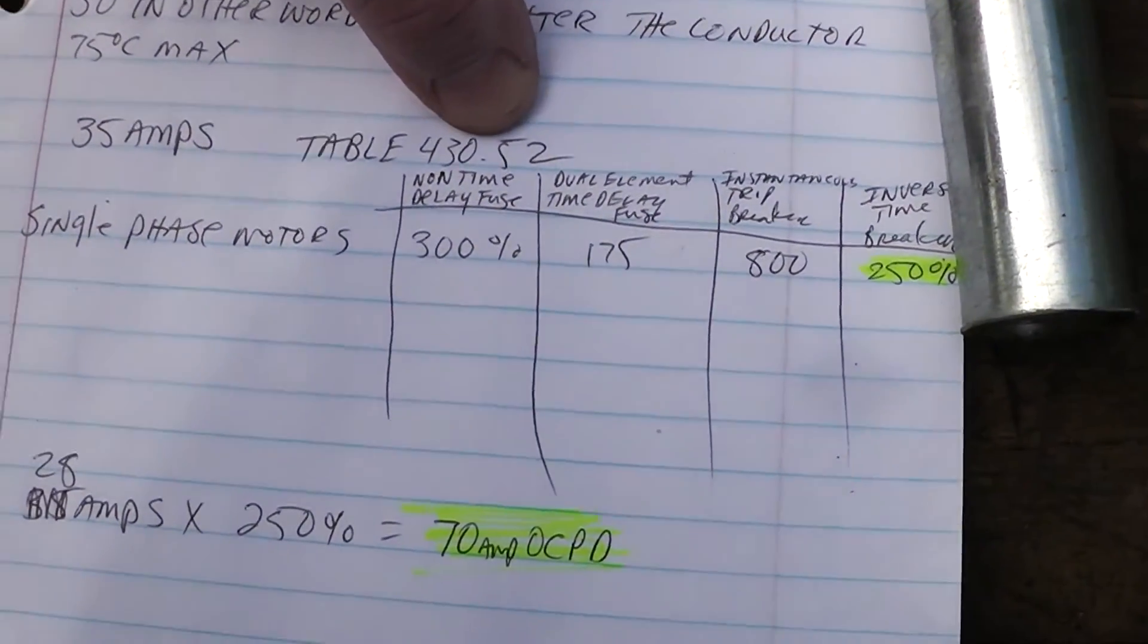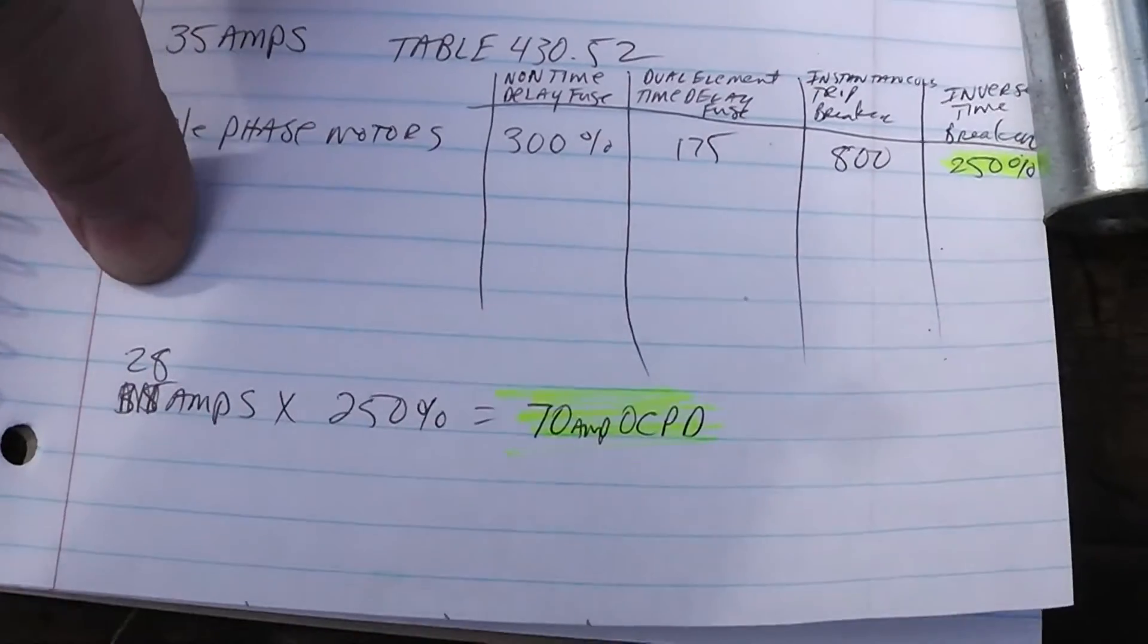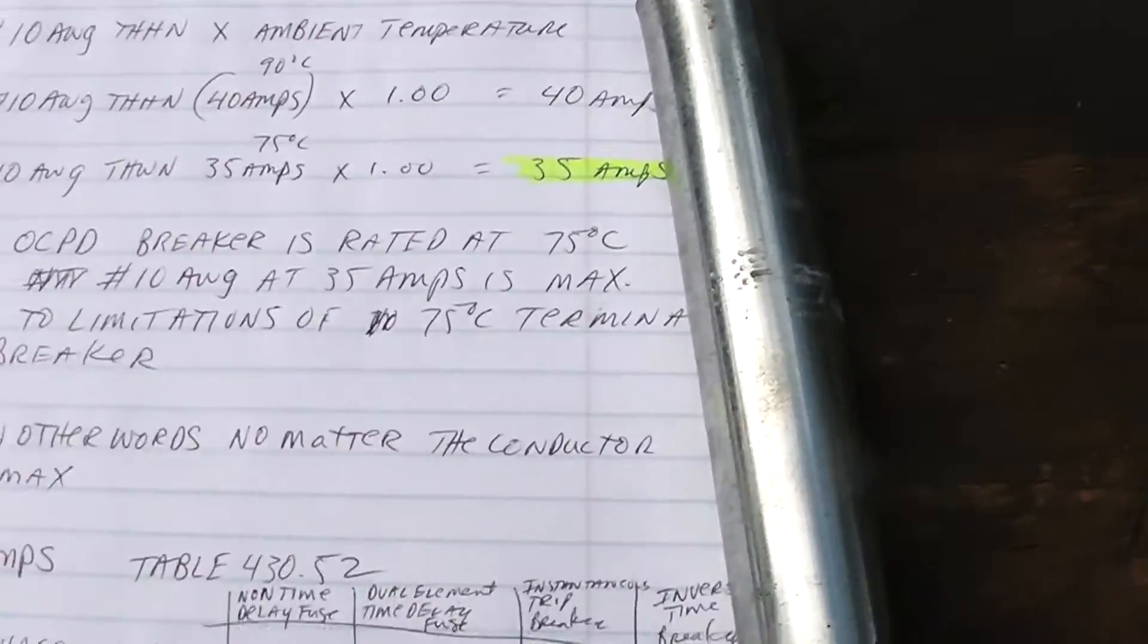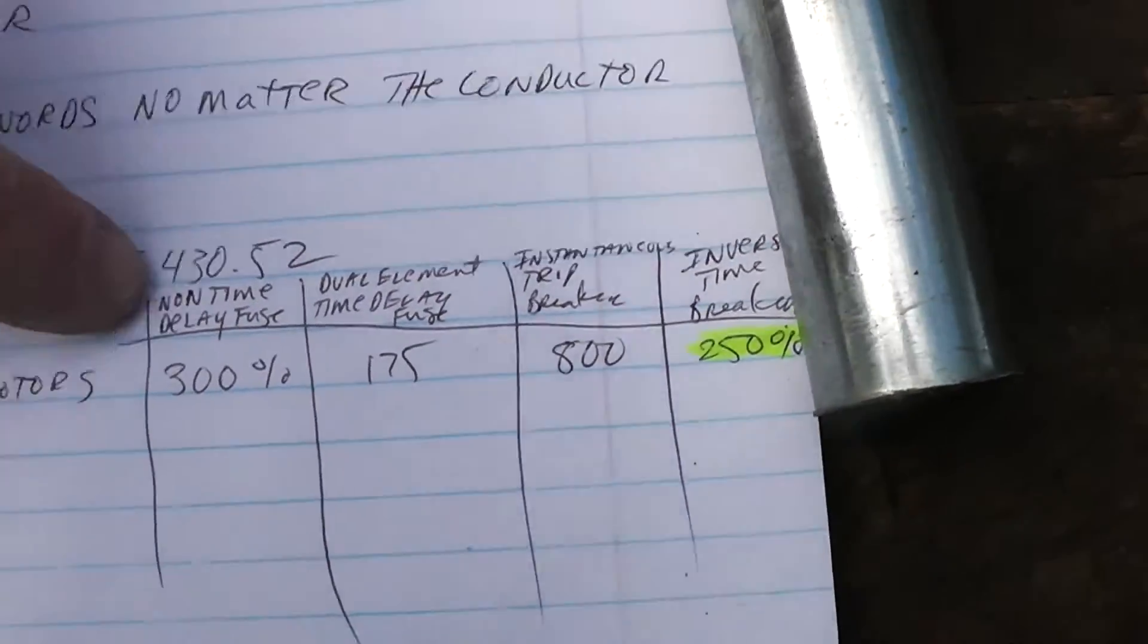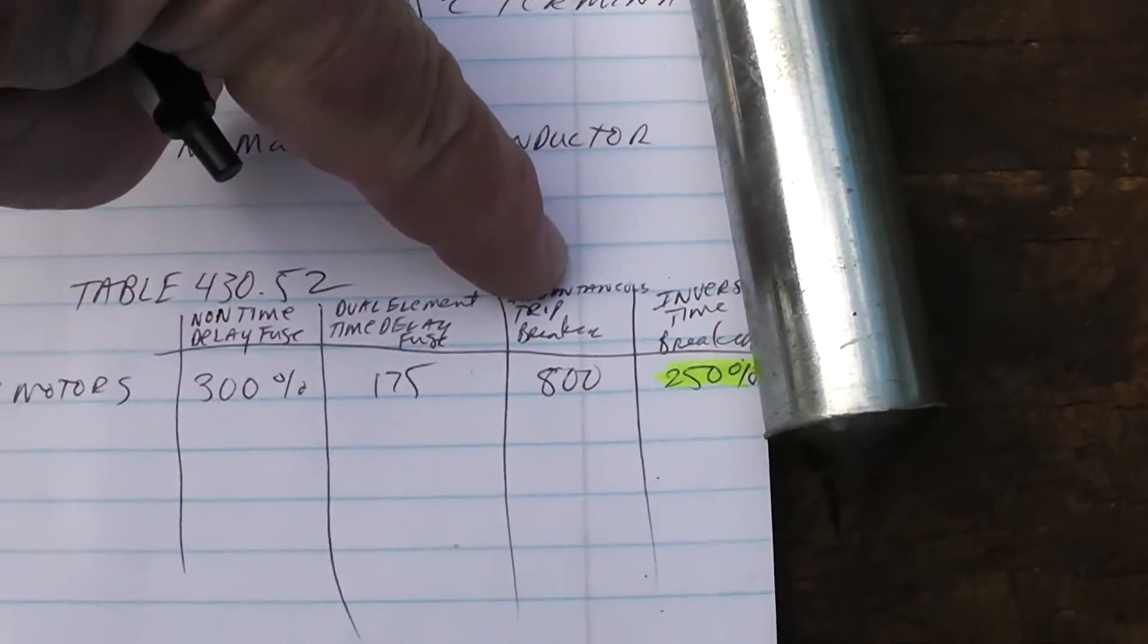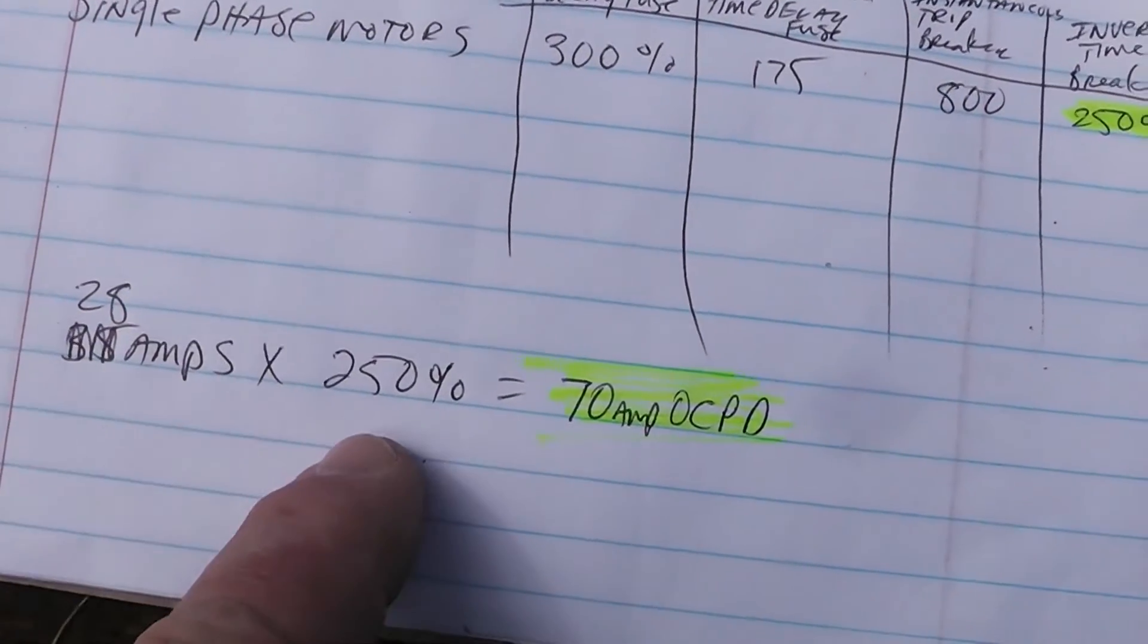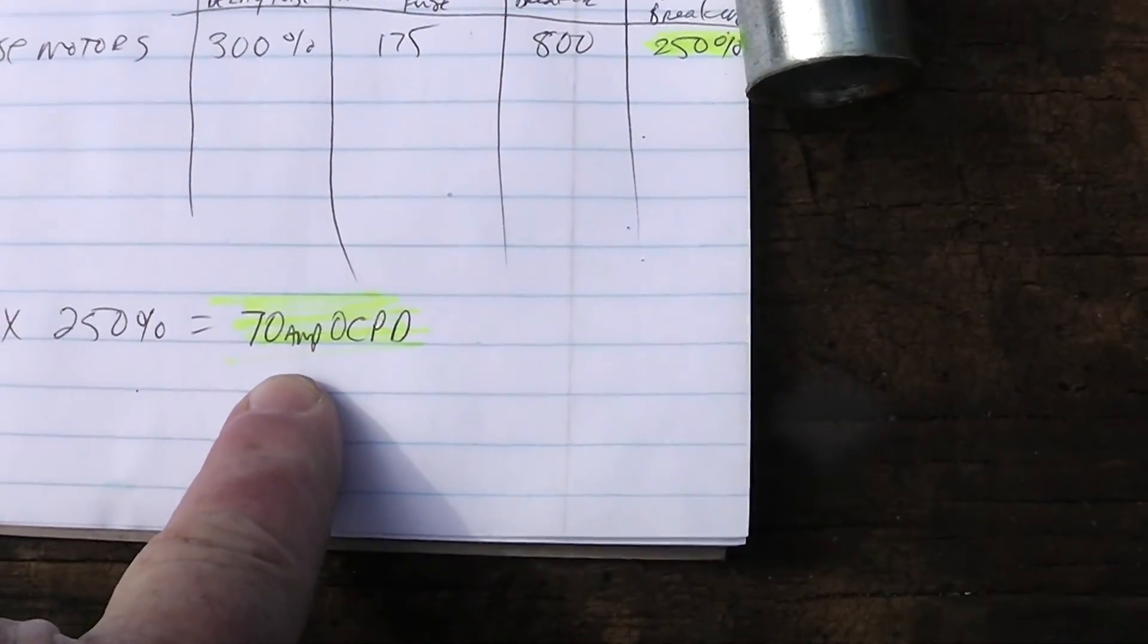Now how do we get to a 70 amp breaker? We go to table 430.52. The conductor has to be rated for 35 amps, but the full load current is what we use - that's 28 amps according to that table. We multiply that by 250 percent. If you're using a non-time delay fuse, multiply by 300 percent. Dual element fuse is 175 percent, instantaneous trip breaker multiply by 800 percent. Here we're using an inverse time breaker, so 250 percent times 28 amps comes out to 70 amps overcurrent protection device.